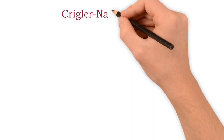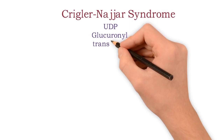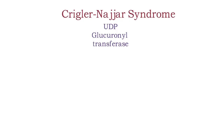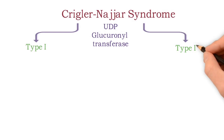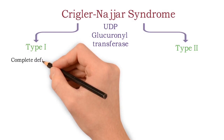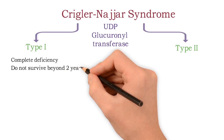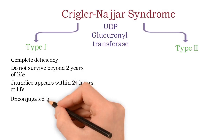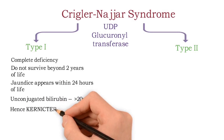We start with Crigler-Najjar syndrome, which is due to deficiency of the enzyme UDP-glucuronyl transferase — the enzyme responsible for conjugation of bilirubin, making it water-soluble. Crigler-Najjar syndrome is of two types: type 1 and type 2. Type 1 is a severe condition due to complete deficiency of this enzyme; the child usually does not survive beyond two years of life. Jaundice typically appears within 24 hours of life. As the conjugation process is hampered, unconjugated bilirubin level increases to more than 20 mg per deciliter and kernicterus results.